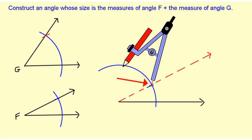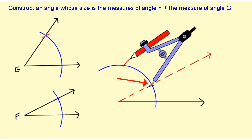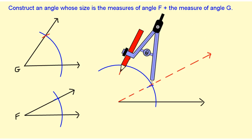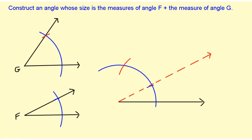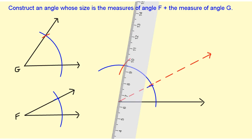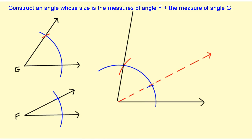I'm going to pick up the compass and put it right here and see where it intersects that arc. Then all I have to do is draw my final ray, and this ray makes the angle that I'm interested in.